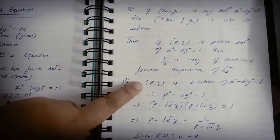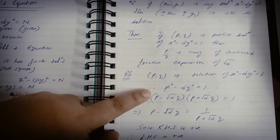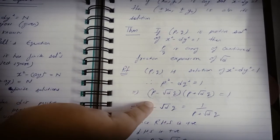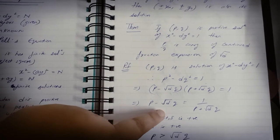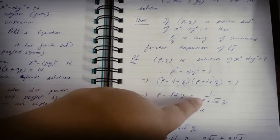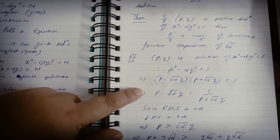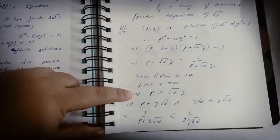Now since (p, q) is a solution of the Pell's equation, to satisfy the a² - b² formula expansion, we get p - √d·q = 1/(p + √d·q). Now this side is positive, so therefore the left-hand side is positive. So p - √d·q > 0, which means p > √d·q.